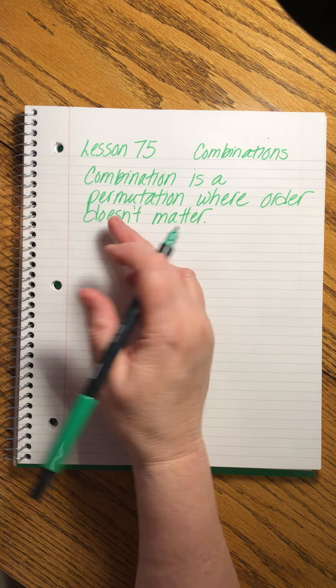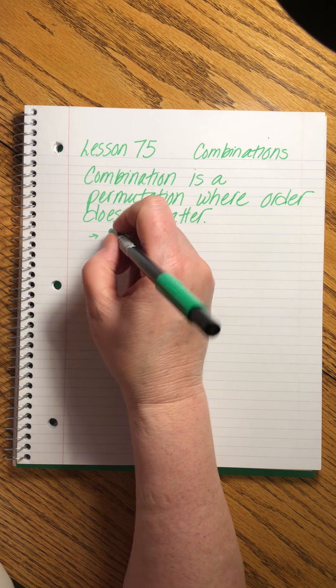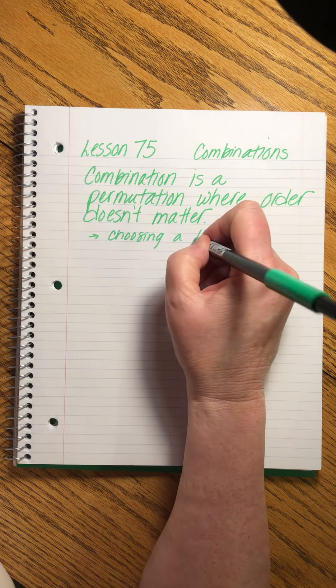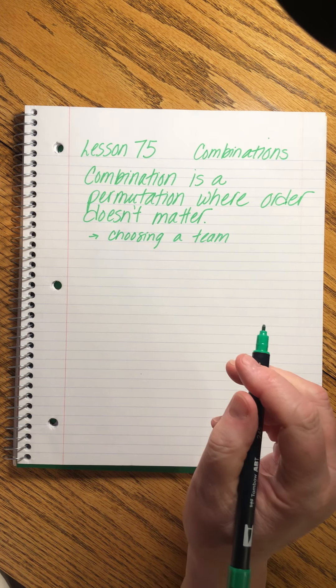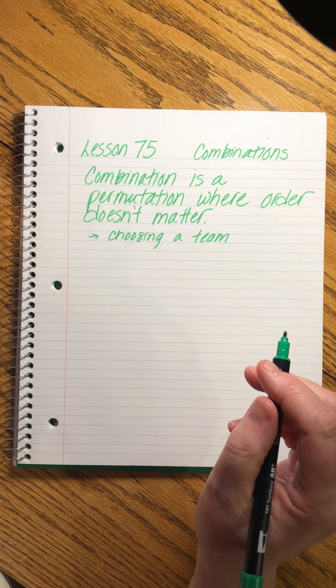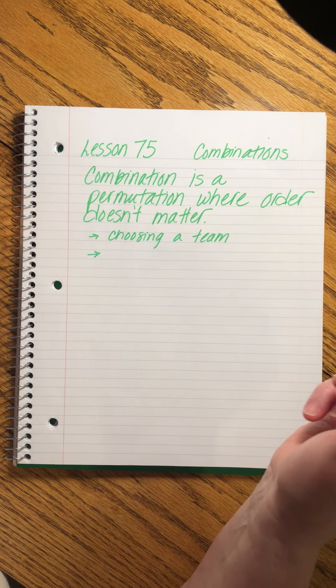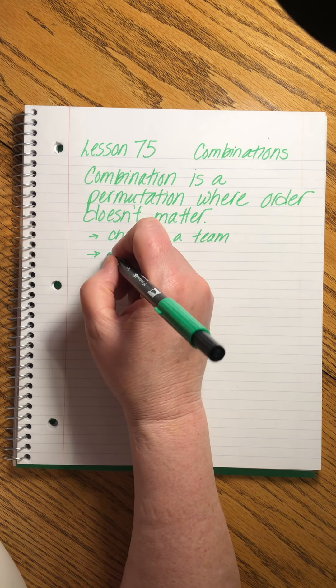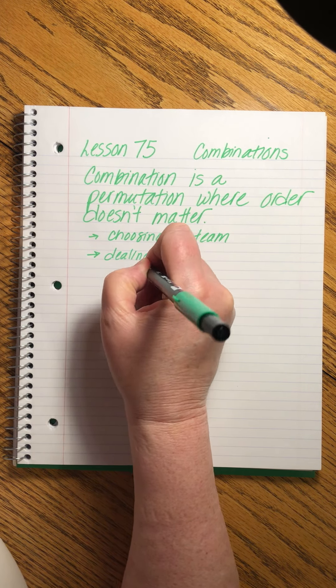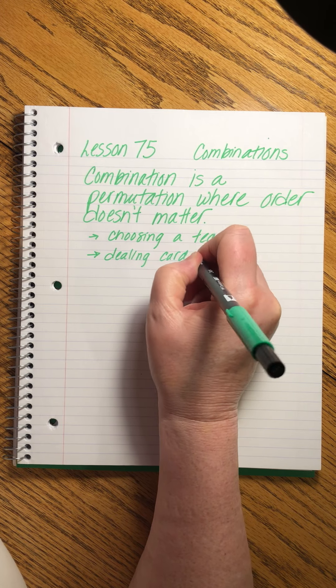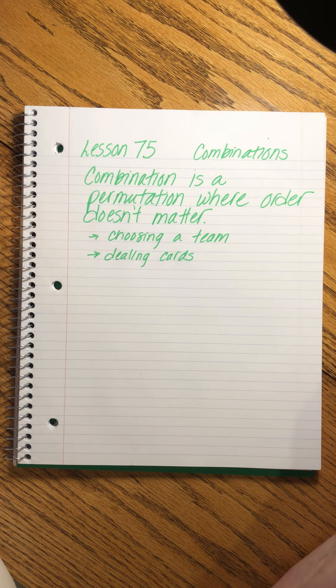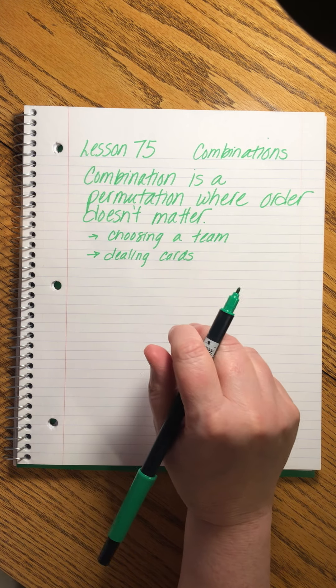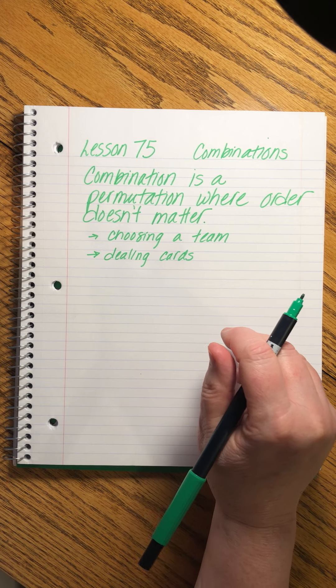Combinations are things like choosing a team of people. Once you're chosen to be on a team, the order doesn't matter. You don't have to stay in the same order the whole time you play. Or another great example is dealing a hand of cards. You don't have to keep your cards in the order they were given to you. You can mix them up. So order doesn't matter.